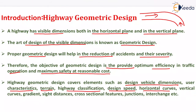Further elements include horizontal curves, vertical curves, gradient (that is slope), sight distances such as overtaking sight distance, stopping sight distance, intermediate sight distance, as well as other sight distances, cross-sectional features, junctions, and interchanges. These are the parameters which are generally present in geometric design.